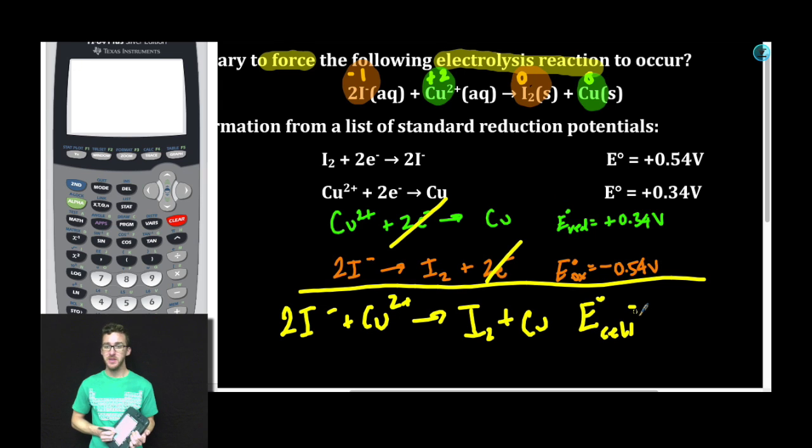What's going on with my cell potential? This is what we really want to focus on in this example. When I add my reduction potential and oxidation potential together, positive 0.34 plus negative 0.54, I end up with a cell potential of negative 0.20 volts. As you focus on the sign of this cell potential with electrolytic cells, we are going to expect a negative voltage. In fact, that's the minimum voltage that we're going to have to apply to this electrolytic cell in order to get this reaction to occur.